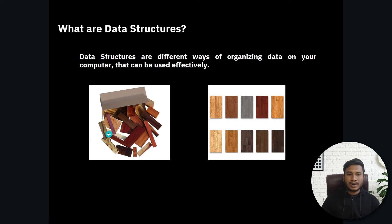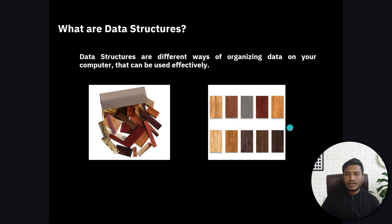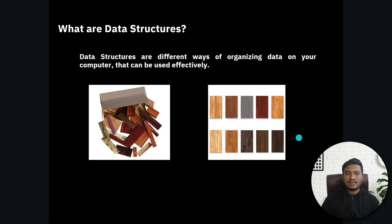Now let's say if I have sorted these woods — we have sorted woods here. Now it would be very easy for you to figure out the black wood and return that particular wood very quickly. This is the example of data structure.